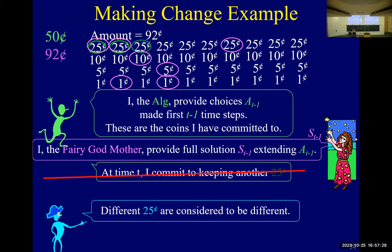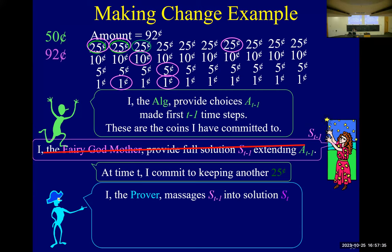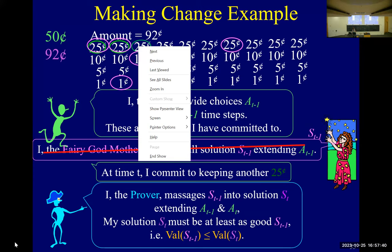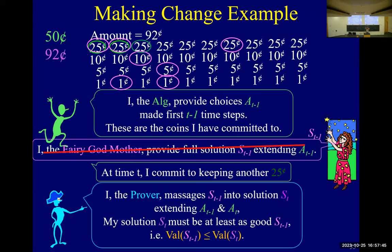Quarters are different - we massage S_{T-1} into S_T. In this case we have a paragraph that says: we swap the quarters. We know it's still valid - why? It still adds up to 92 cents. It's still optimal because it has the same number of coins. It extends what the algorithm has done because we didn't change the earlier coins and we fixed the new coin. Everybody get this easy example? So we did that and life is good.